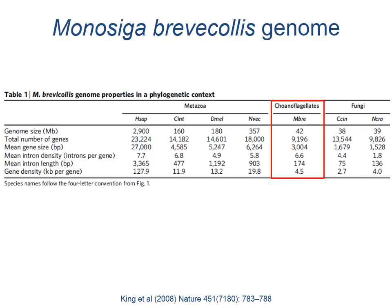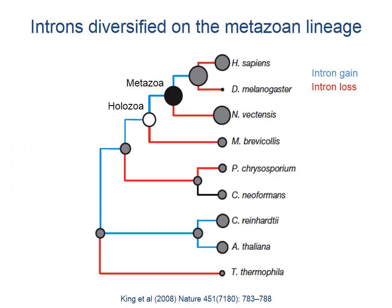The Monosiga brevicollis genome is 42 megabase pairs in size. It contains more than 9,000 genes and is highly compacted, with fewer and shorter introns compared to other animal genomes. One major finding from the choanoflagellate genome is that introns — the intervening sequences within genes — diversified on the lineage leading to the choanoflagellates and animals.